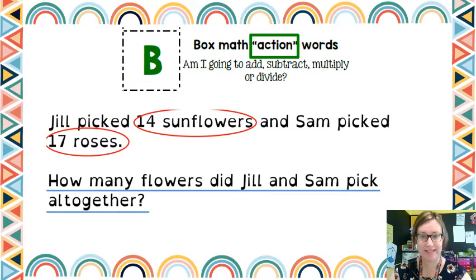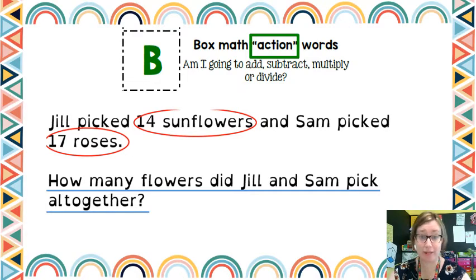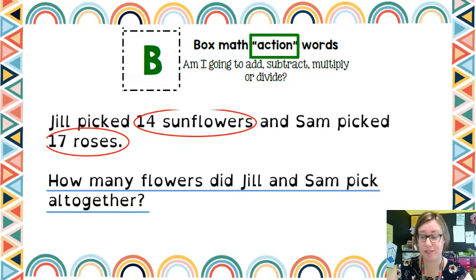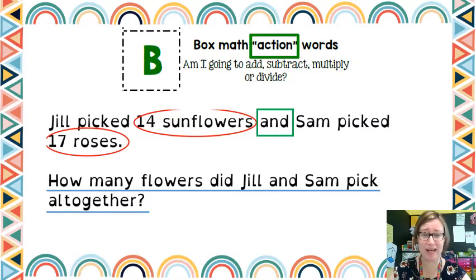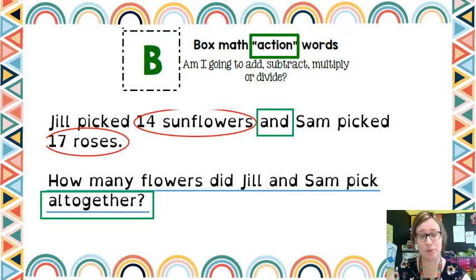The B stands for box the maths action words. Basically, it's asking us what are we going to be doing — are we adding, subtracting, multiplying, or dividing? In this case, we can look at the word 'and'. It doesn't always mean to add, but it could be a clue. The main hint here is the word 'altogether' in the last sentence, the question that it's actually asking us.